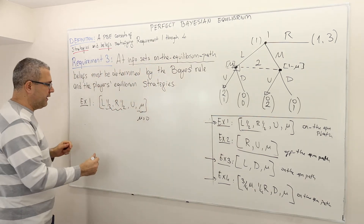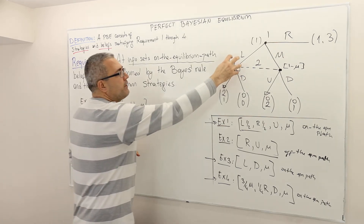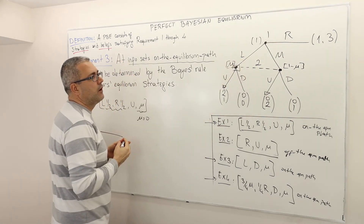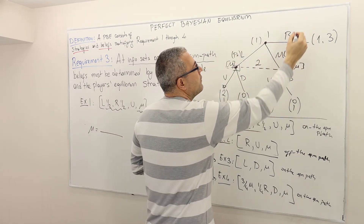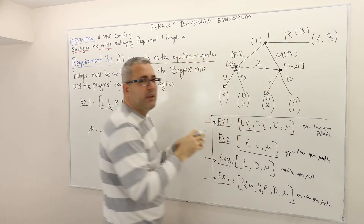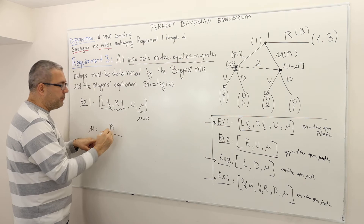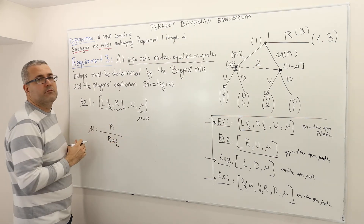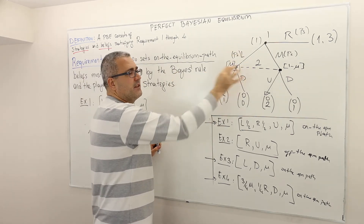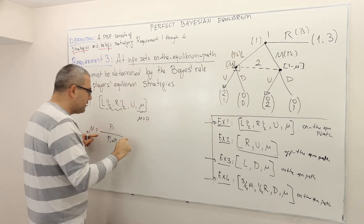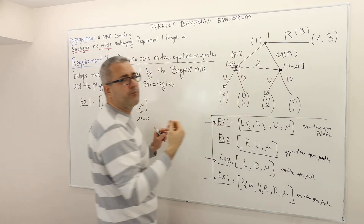Let's formally derive this. Mu is P1 divided by P1 plus P2, where P1 is the probability of ending up at this decision node and P1 plus P2 is the probability of reaching this information set. The probability that player one plays left — P1 — is one-half. What is P2? The probability that player one plays M is zero. So one-half divided by one-half plus zero equals one.